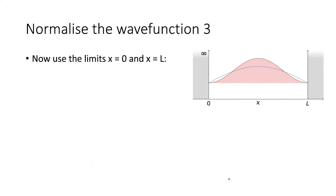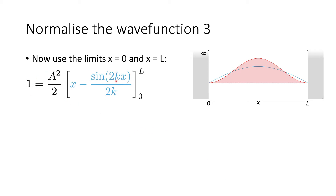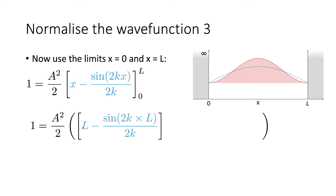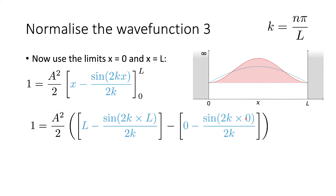Our next step in normalizing our wave function is to use the limits x = 0 and x = L. We use our definite integral and substitute the value of L in, then subtract the value where x = 0. Looking at the x = 0 term: we have sine of 2k times 0, which means everything in that bracket is 0 — sine of 0 is 0 — so this whole bracket cancels out to 0.